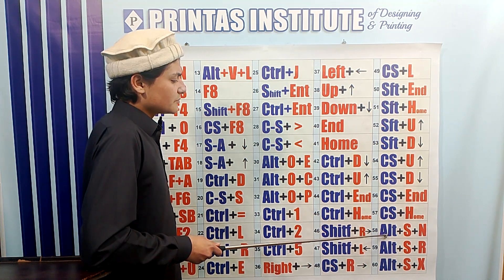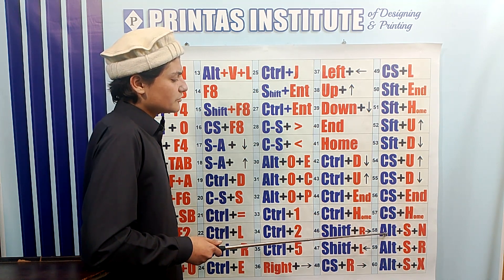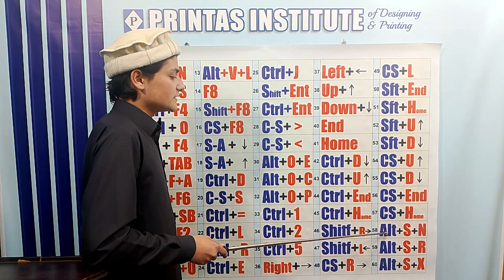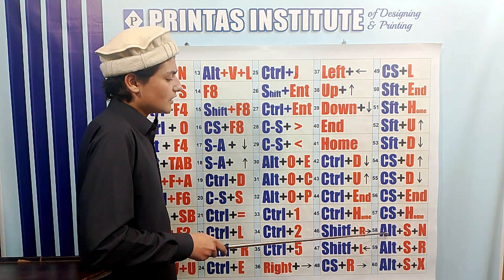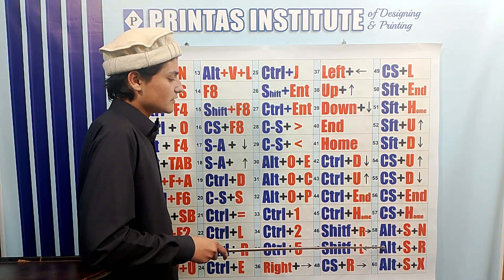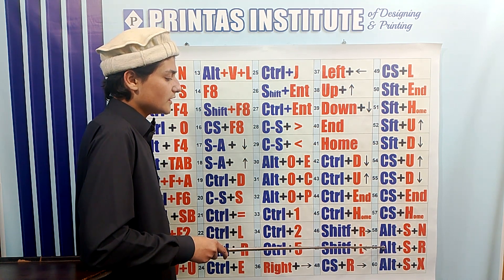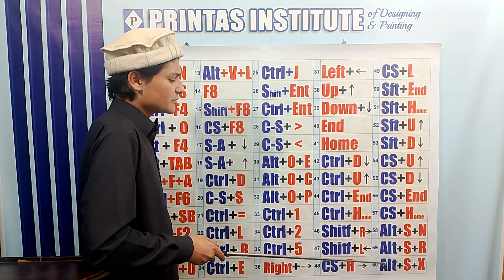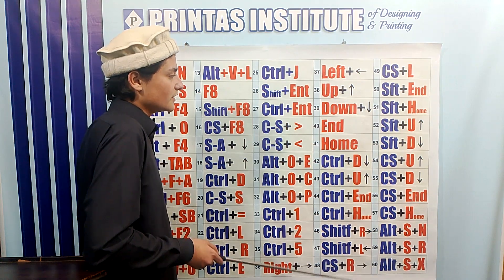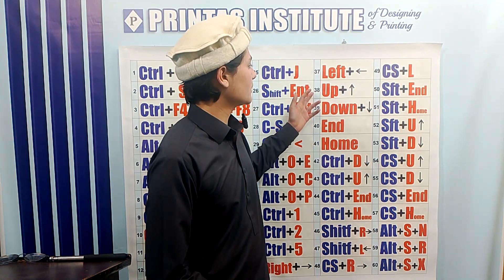R Space Bar N is used to minimize the file. R Space Bar R is used to restore the file. Alt Space Bar X is used to maximize the file. The lecture is ended — if you have any problem with the commands, you can ask us by mentioning the command number in the comment section. Hope you have liked the lecture.